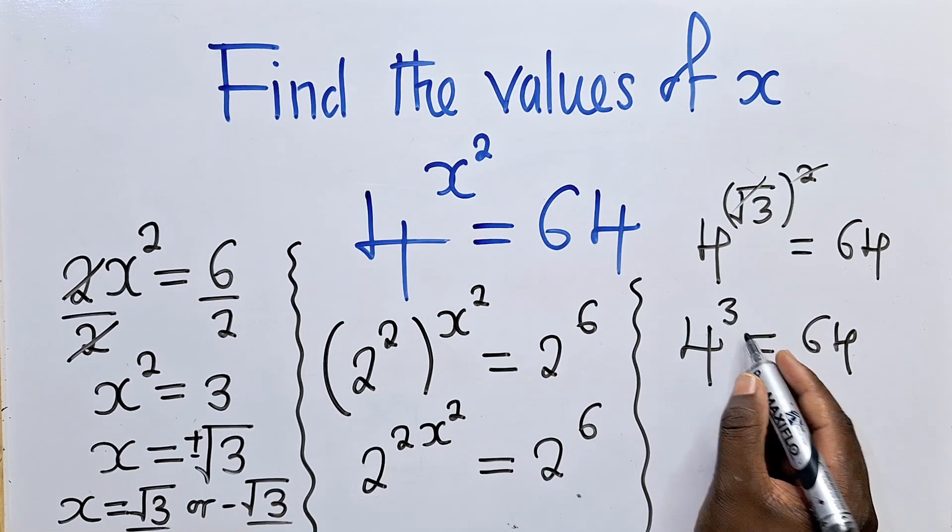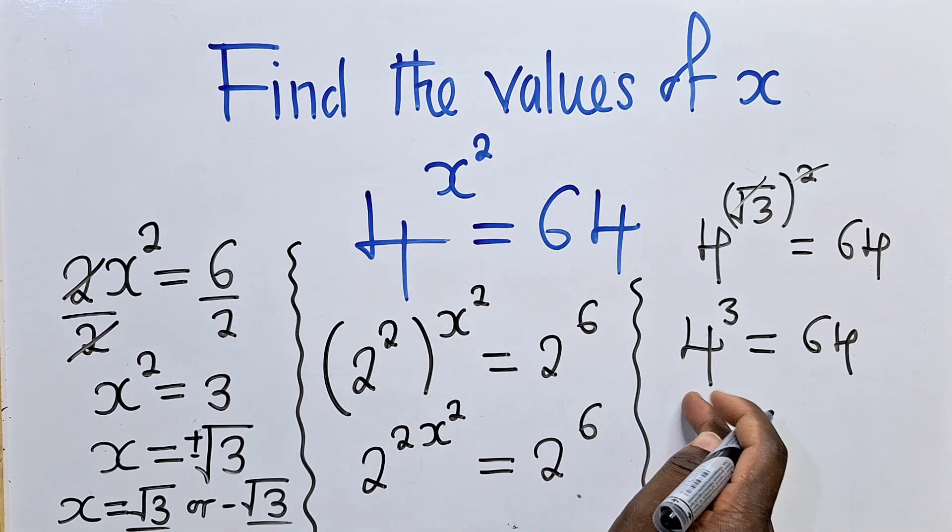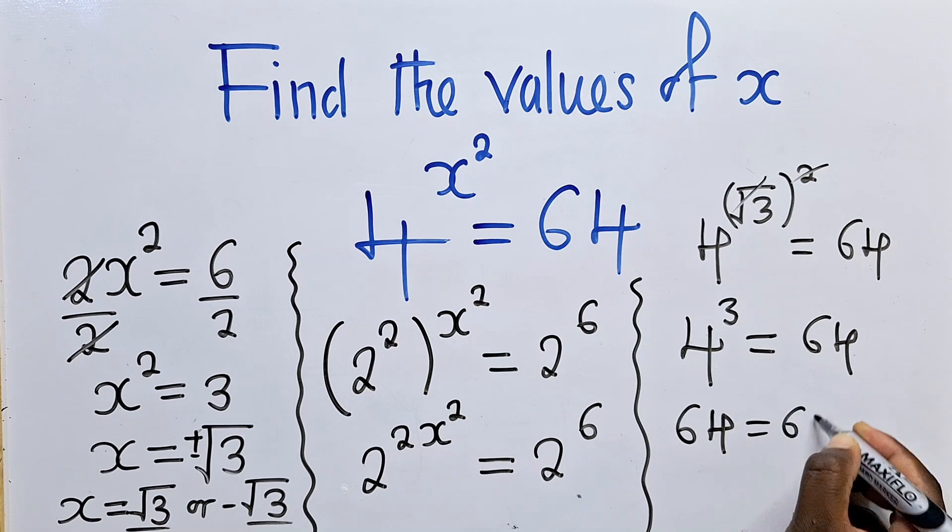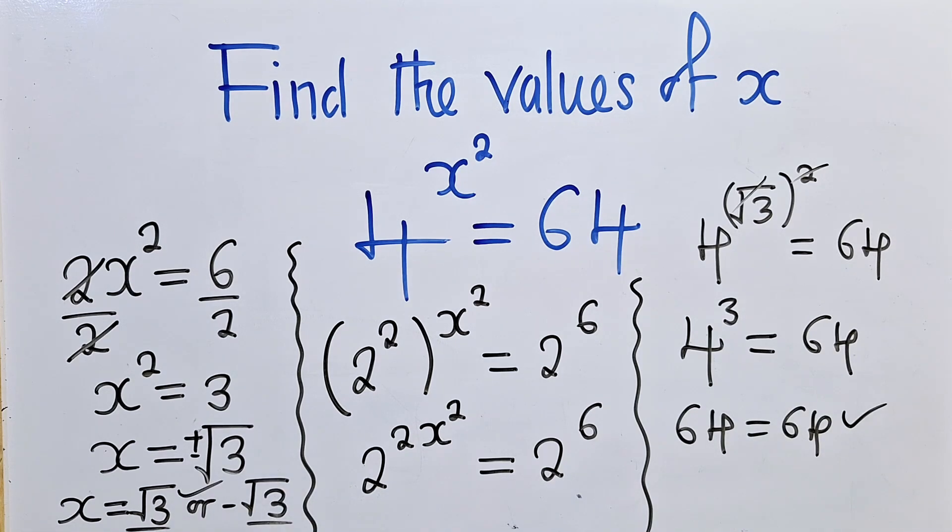What is 4 power 3? 4 times 4, it's 16, times 4, it's 64, which is equal to 64. This holds. So this is one of the solutions.